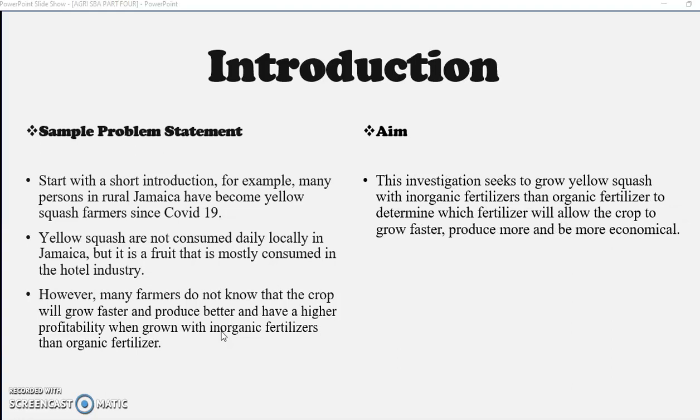You need an aim, so the aim now is to grow yellow squash using both organic and inorganic fertilizer to see which one will have a better impact on the growth rate, the production and the profitability of the crop.